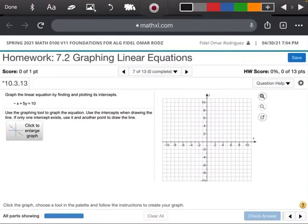All right, so this is number 7 out of 7.2, and it says to graph the linear equation by finding and plotting the intercepts.